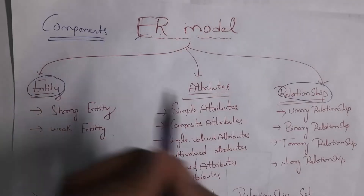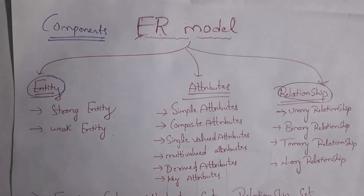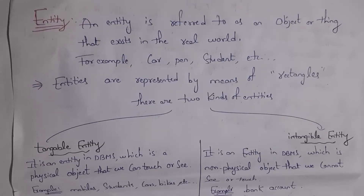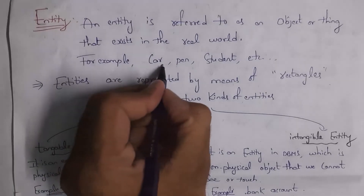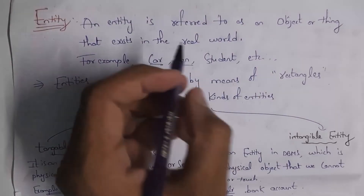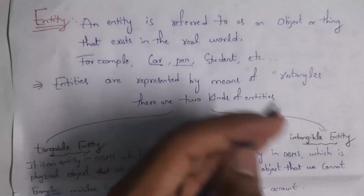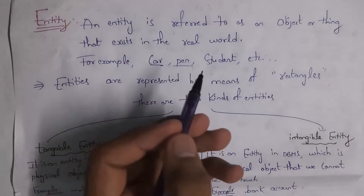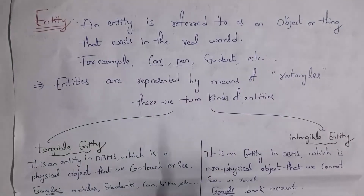These are three components in ER model. The first one is entity. Entity is nothing but a table name — it is an object or thing that exists in the real world. For example, car, pen, student, faculty — we can create car table, pen table, student table, faculty table and so on. All of these are entities and we represent entities using rectangle.